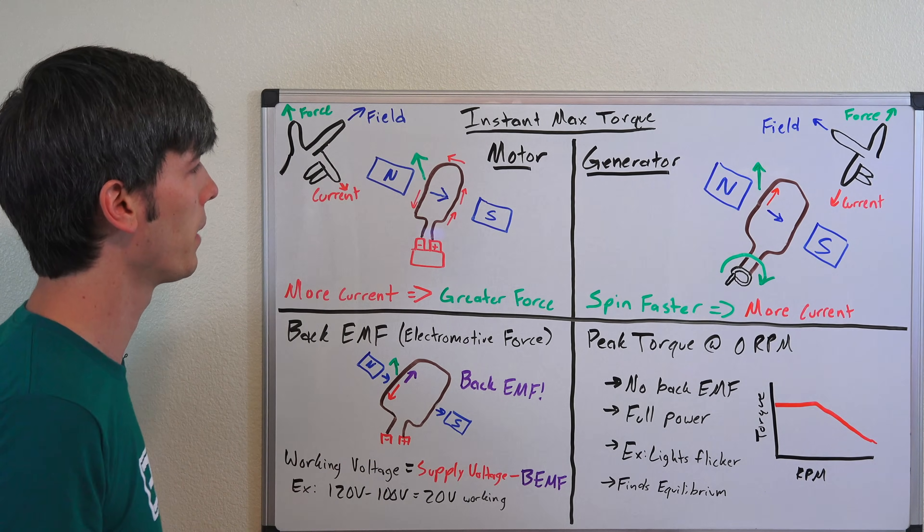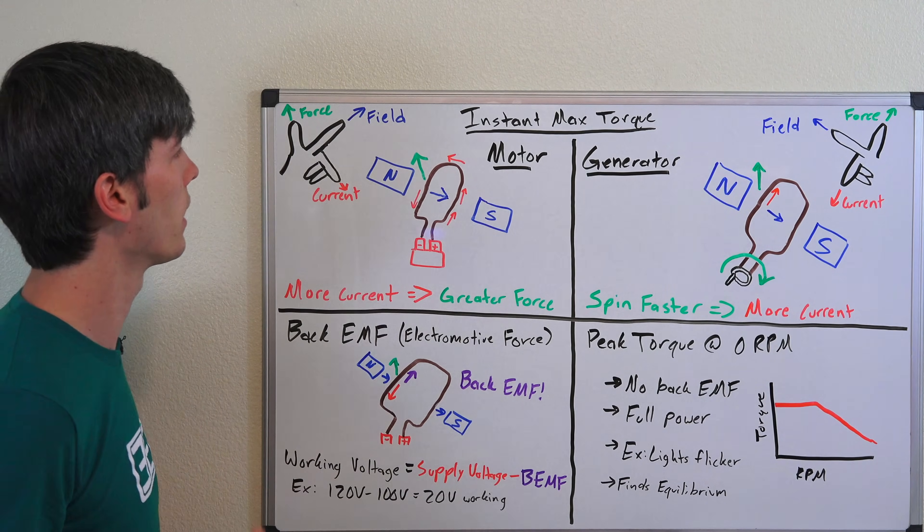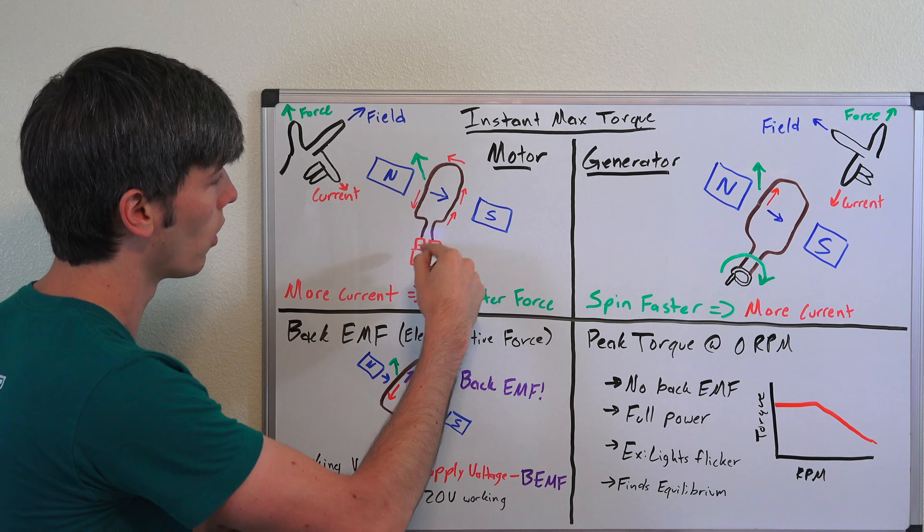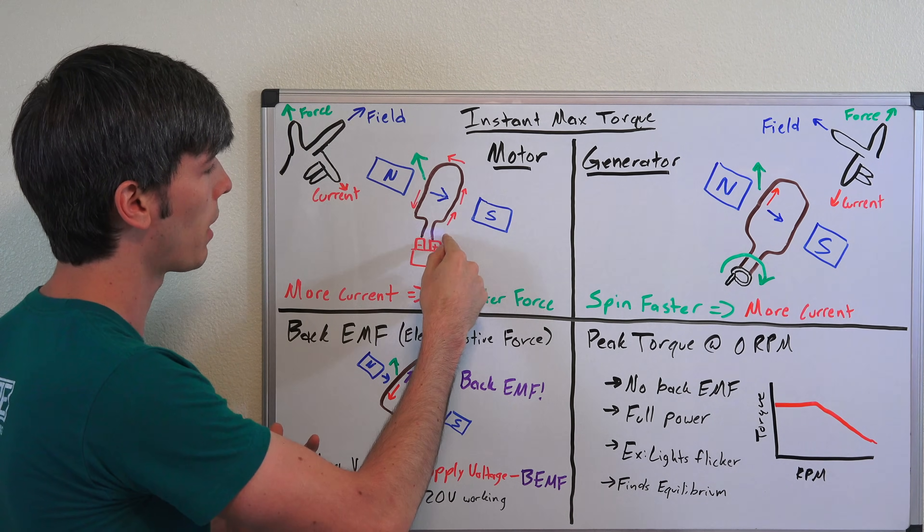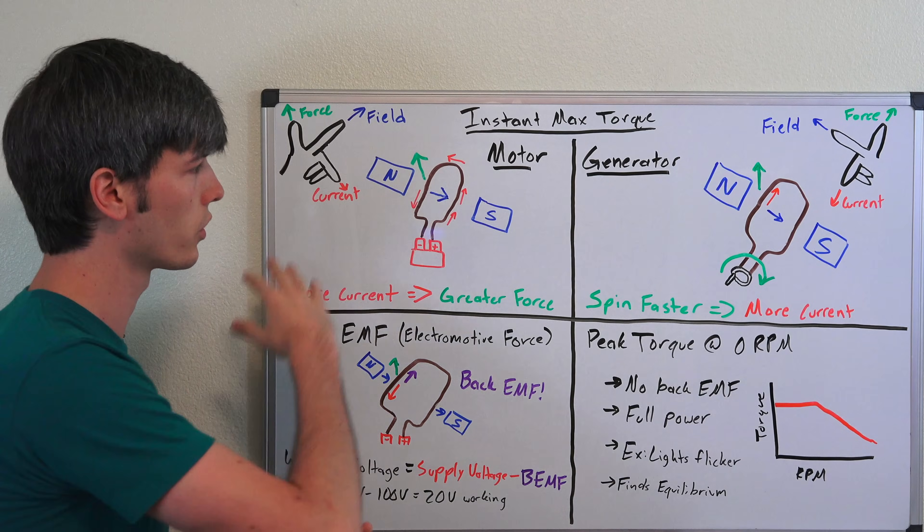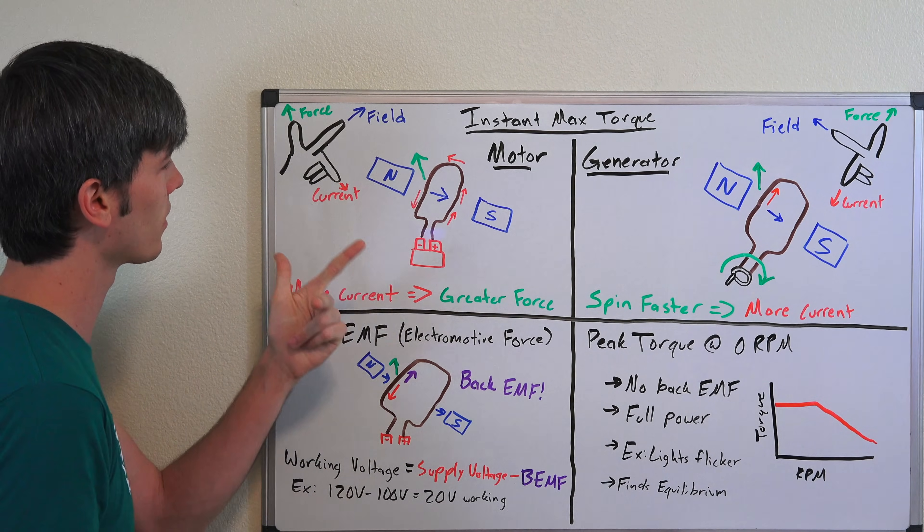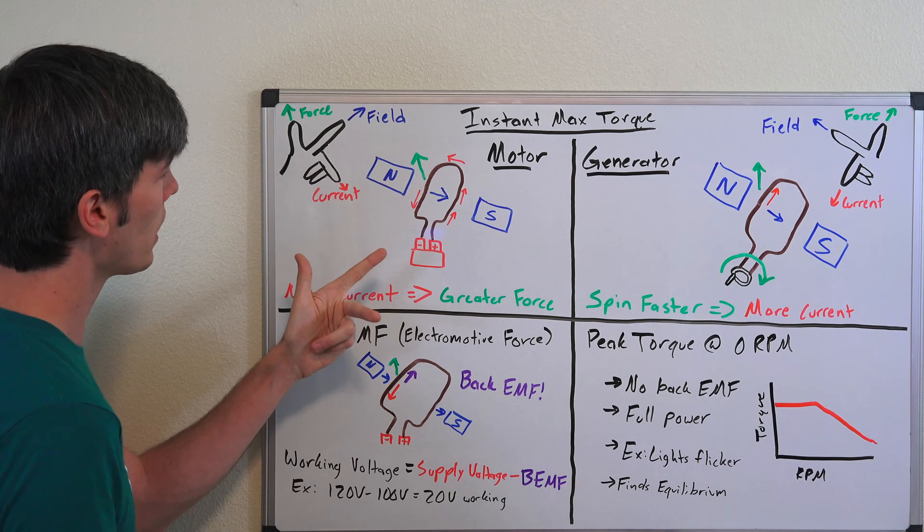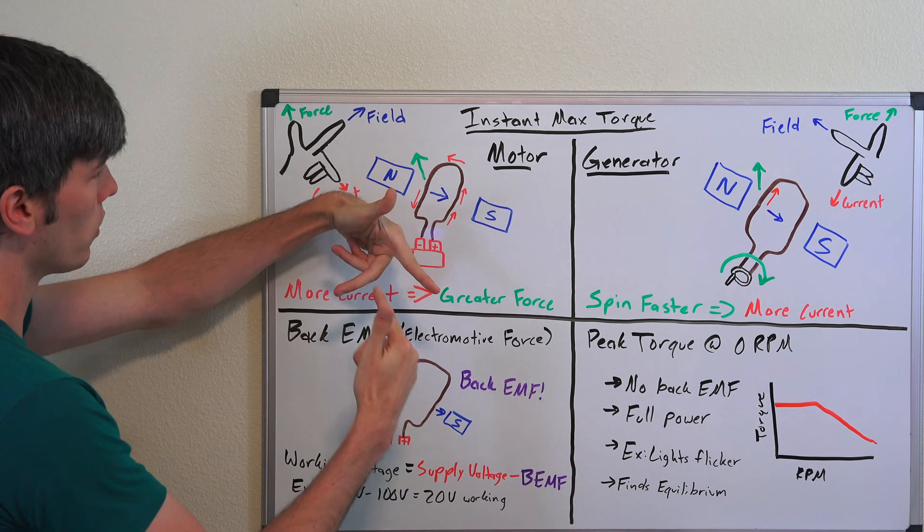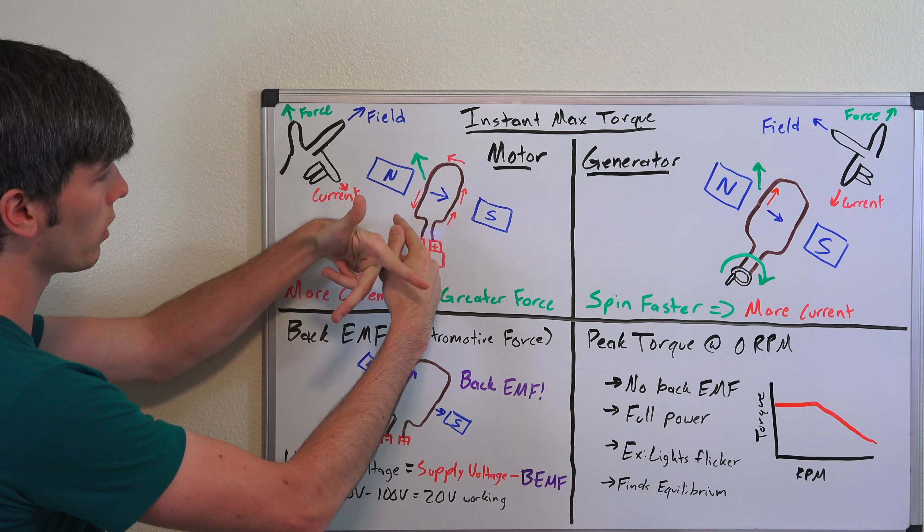Now, old convention states that current travels from positive to negative. Electrons are actually traveling in the opposite direction, but that's the convention. So using Fleming's left-hand rule, if you line up the field with your pointer finger, your current with your middle finger, then your thumb is going to point the direction of the force.